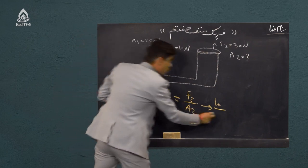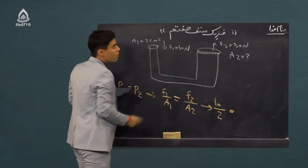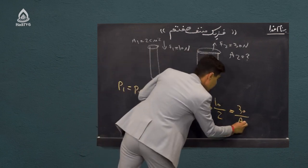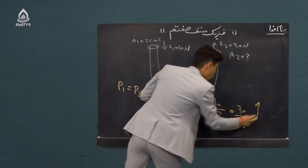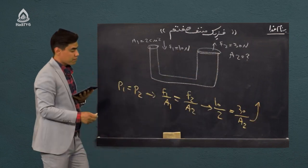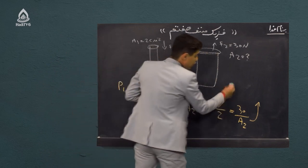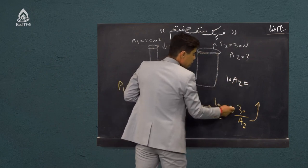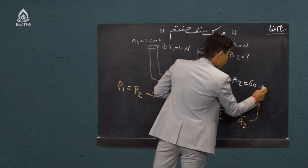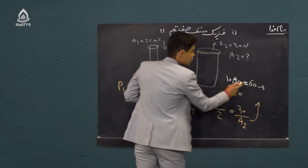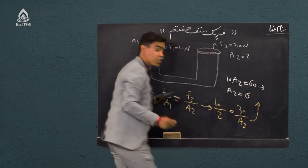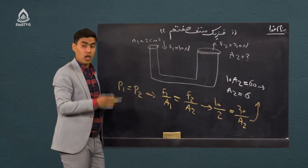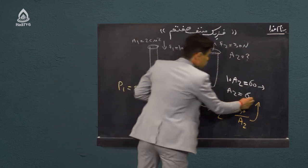F1 ده نیوتن، A1 دو، F2 سی نیوتن قرار میدهیم. با ضرب دو طرف، ده × A2 = دو × سی = شصت. پس A2 = شصت بر ده = شش. واحدش چون پیستون کوچک بر اساس سانتیمتر مربع داده شده بود، پس A2 هم شش سانتیمتر مربع میشود.